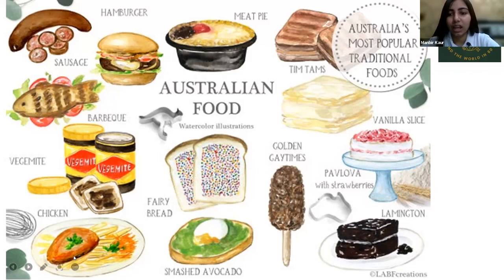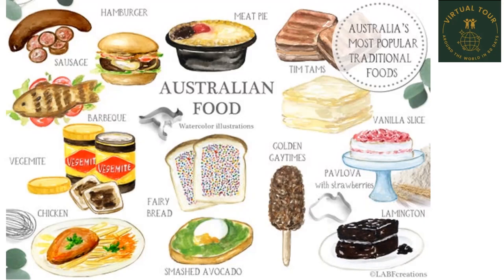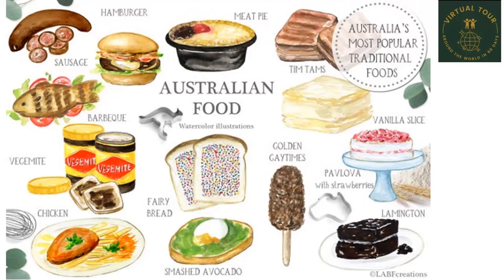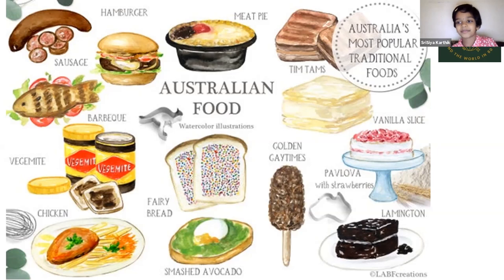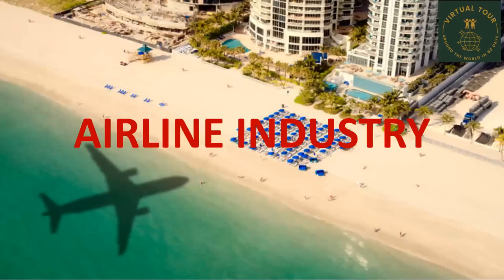They also eat fairy bread and smashed avocados. Would you like to taste some of them? Anyone for hamburger? Anyone for chicken? Okay, fairy bread and vanilla slice — that's actually a dessert! I also want a burger! Wonderful — me too, I eat hamburgers!